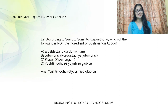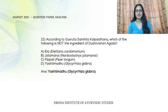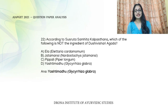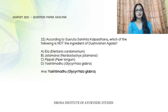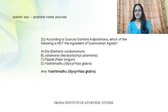According to Sushruta Samhita Kalpastana, which is not an ingredient of Dushi Vishahri Agatha? The ingredients listed in the second chapter are Pippali, Dhyamakam Mamsi, Shabaram (Lodra), Paripelava, Suvarchika, Sukshma Ela, Toya, and Kanaka Gairika. Ela is included as Sukshma Ela; Mamsi is included; Pippali is the first ingredient. Yeshti Madhu is not mentioned — so the answer is Yeshti Madhu.